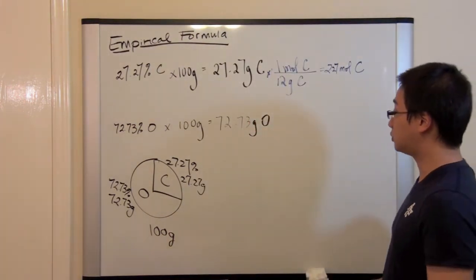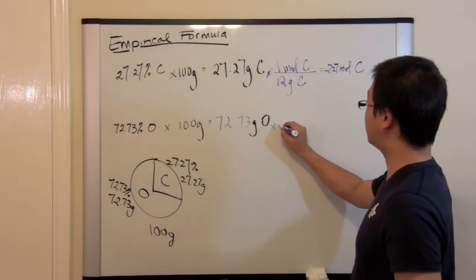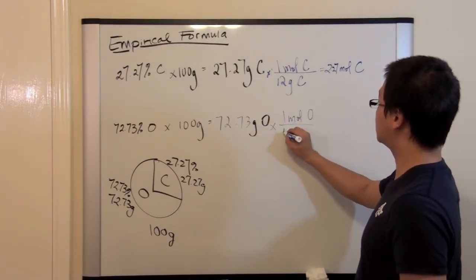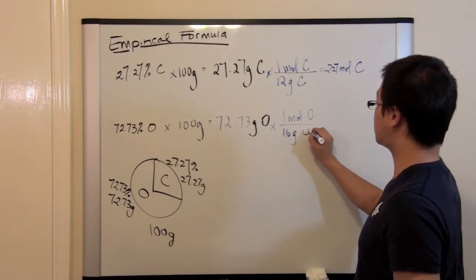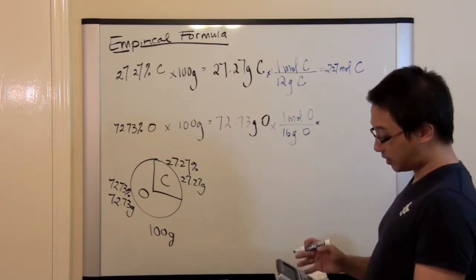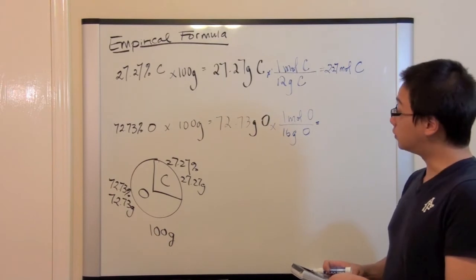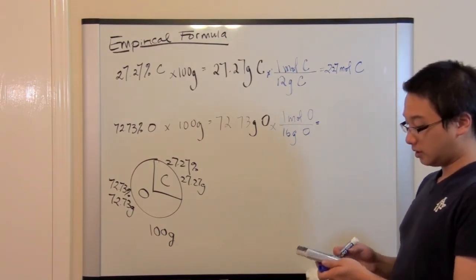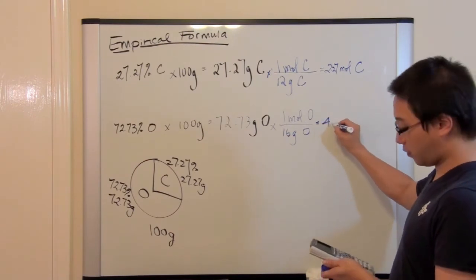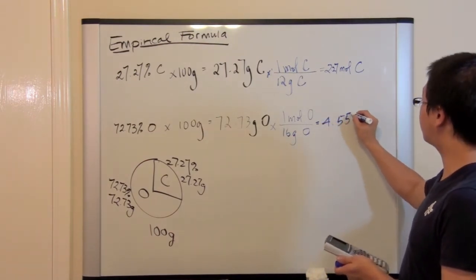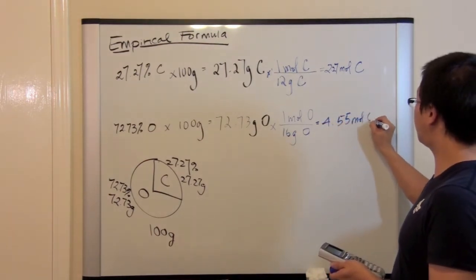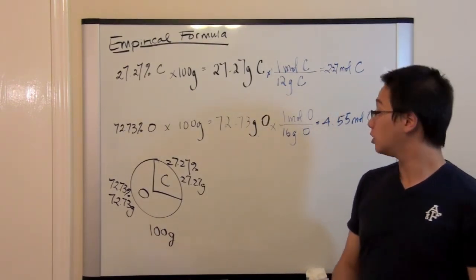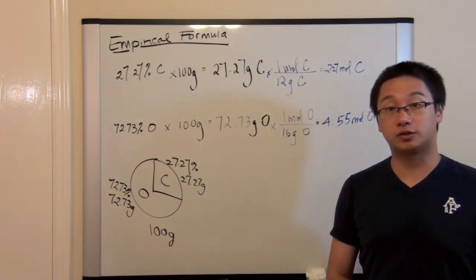And we will do the same for oxygen. So we will multiply by the molar mass. 1 mole of oxygen over 16 grams of oxygen. So let's see what we would get. 72.73 grams divided by 16 grams. We have 4.55 mole of oxygen. So out of this 72.73 grams of oxygen, we have 4.55 moles of oxygen.